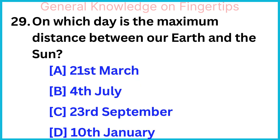On which day is the maximum distance between our Earth and the Sun? 4th July.